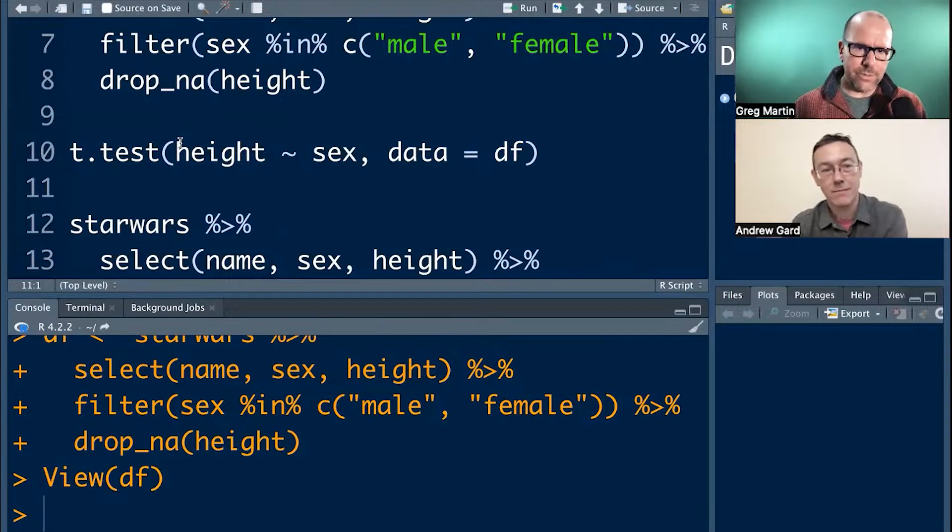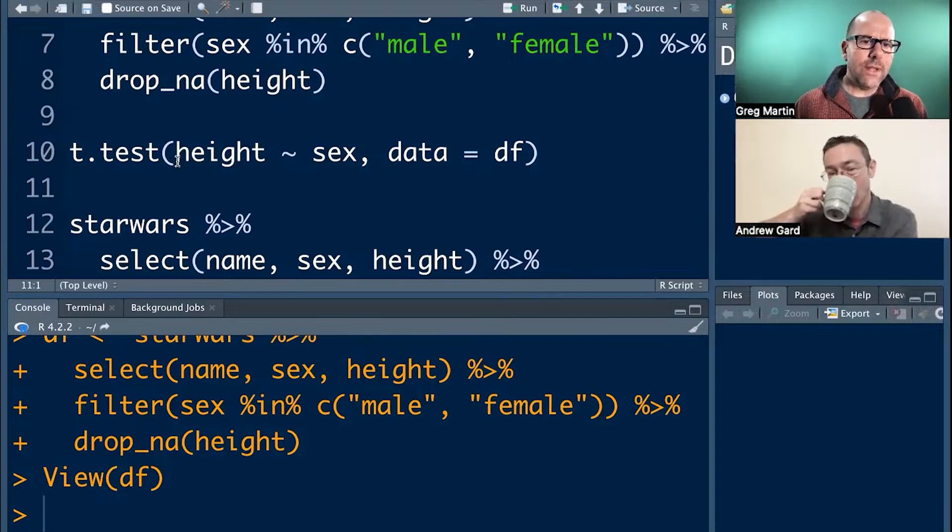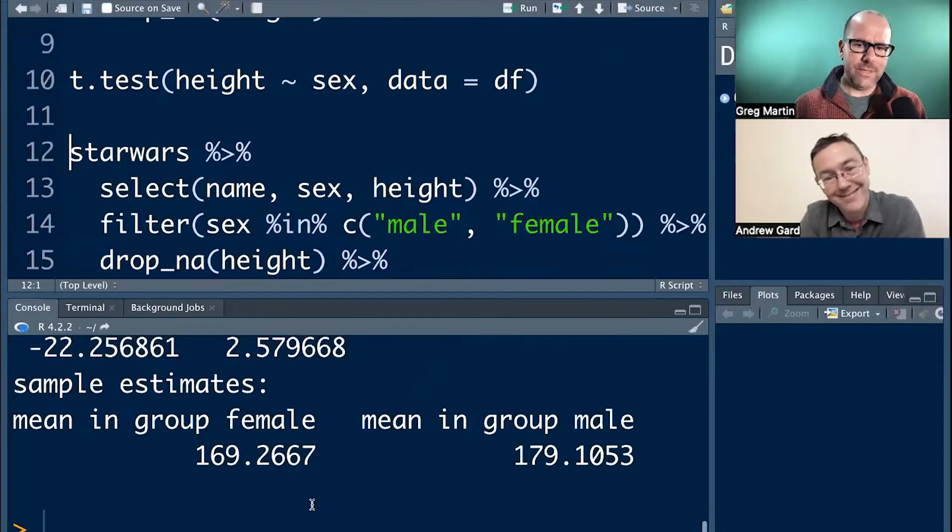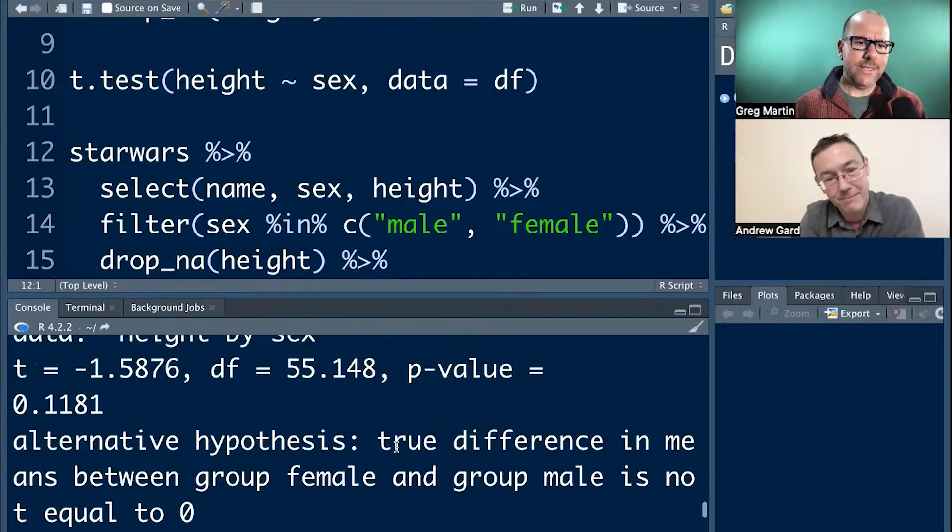Here's our t-test. The function is t.test. The first argument is saying, take our numeric variable height and disaggregate it by sex and do the t-test, compare the heights. And we say then data frame equals DF. Now, what's important about all of this, the point that I'm getting to is that for the t-test, the t-test function wants to see the data argument here at the end, right? And if we run that, let's just run that. You know, and here it is. Females are shorter than males, but that is not statistically significant. P value of 0.1. So, you know, surprise, surprise.